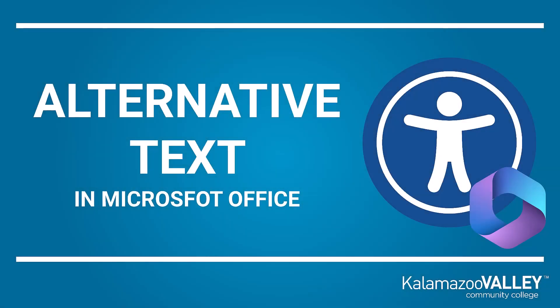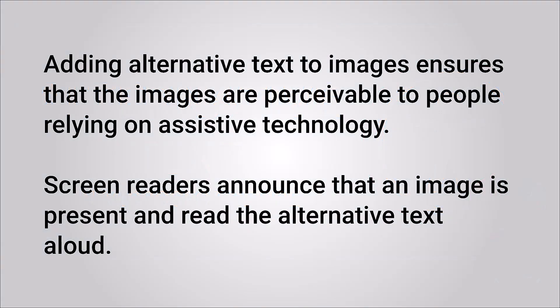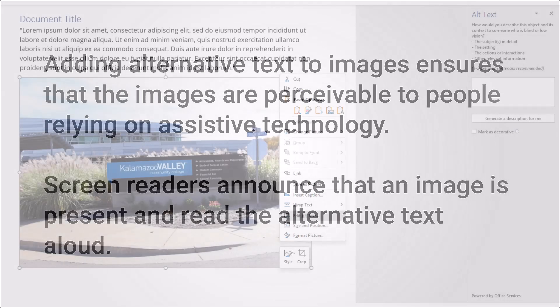This video will show you how to add alternative text to images in your Microsoft Office documents, spreadsheets, and presentations. Adding alternative text to images ensures that the images are perceivable to people relying on assistive technology. Screen readers will announce that an image is present and read the alternative text aloud.